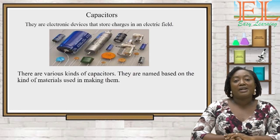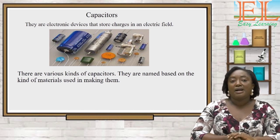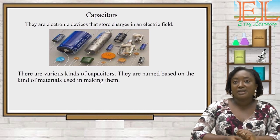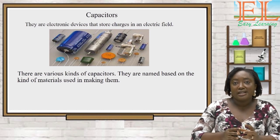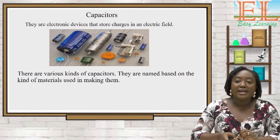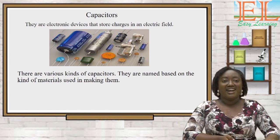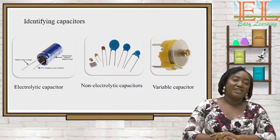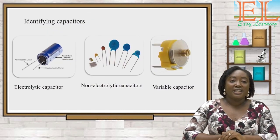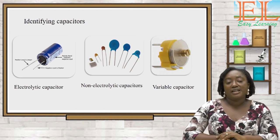We move on to our next electronic component: capacitors. Capacitors are electronic devices that store charges in an electric field. There are many kinds of capacitors, named based on the material used in making them. One type is the electrolytic capacitor, which is unique in that it is sensitive to where it is placed in a circuit.